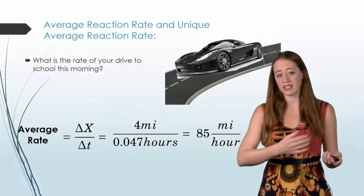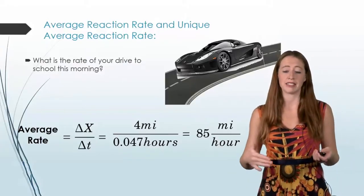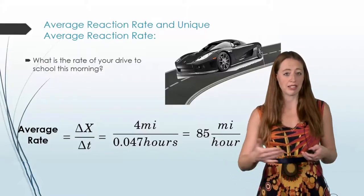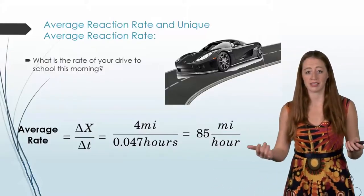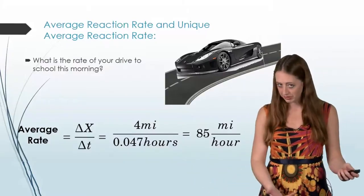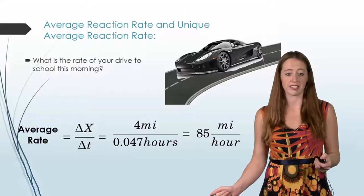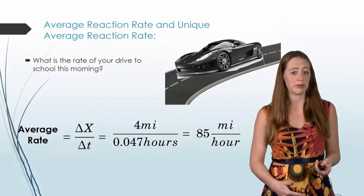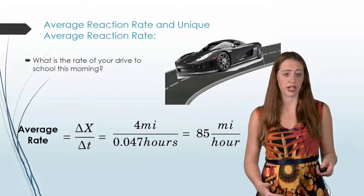Now, notice that doesn't necessarily mean that you were driving 85 miles the entire way. Maybe the last mile you were driving 5 miles an hour, which means that you must have been driving well over 90 miles an hour on the previous part of it. It's just looking at it over the whole distance. And this is the same way when we look at average reaction rate.